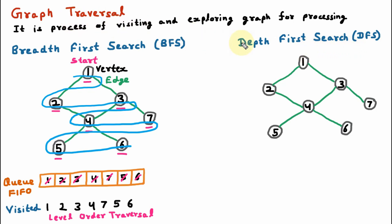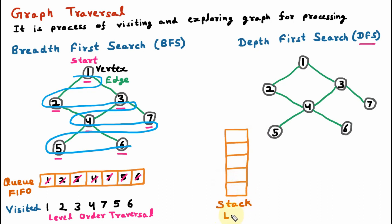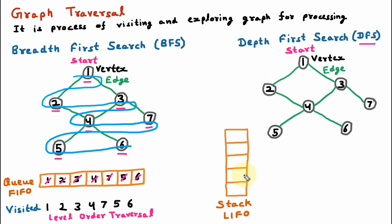Now we are learning the next graph traversal technique, which is Depth First Search or DFS. Depth first search uses the stack data structure, and a stack is LIFO — that means last in, first out. In this graph the black color numbers are the vertices and the green color lines connecting the vertices are the edges. We can apply depth first search from any vertex, but let us assume vertex 1 is the start vertex. In depth first search, first of all we visit the vertex, then while exploring — going to a neighbor — we put that vertex into the stack. So we are on vertex 1.